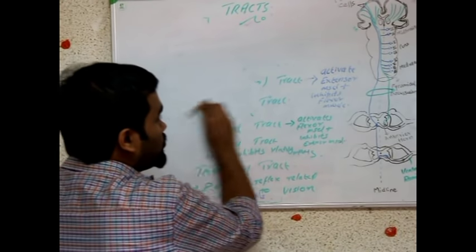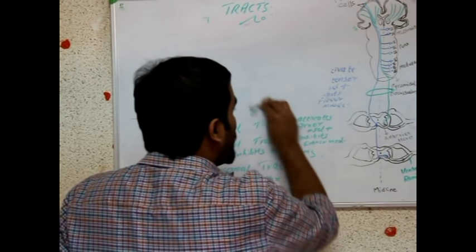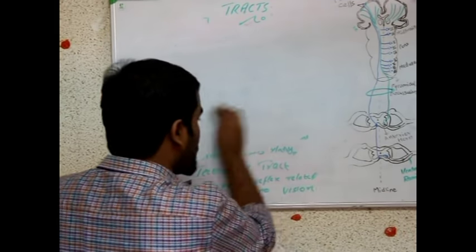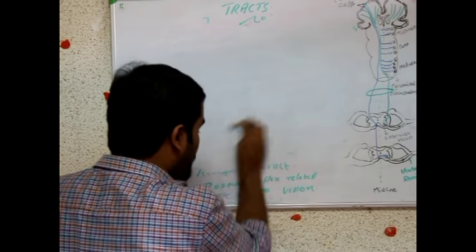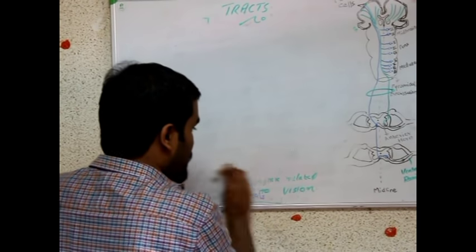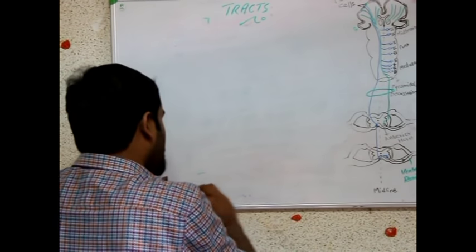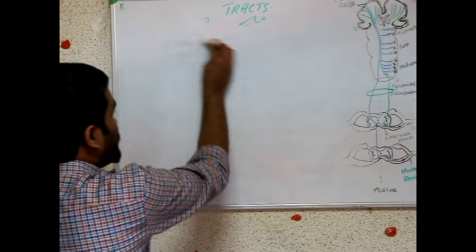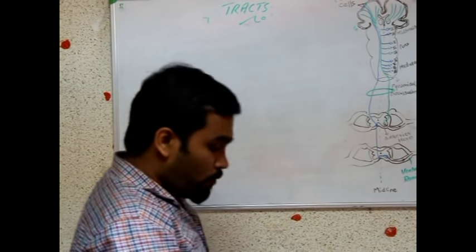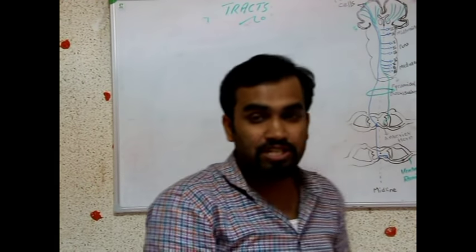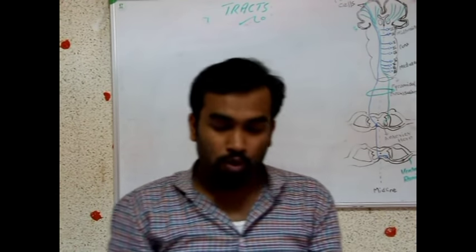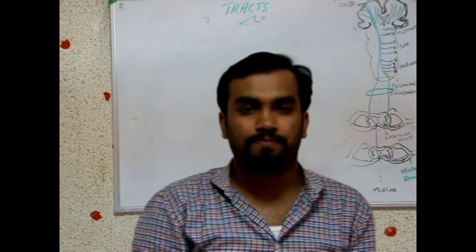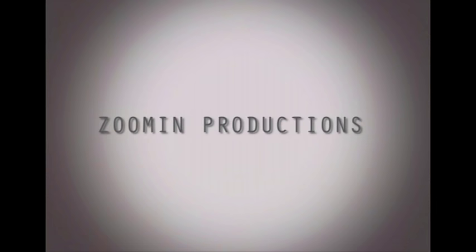So I think you are clear about the pyramidal and extrapyramidal systems briefly. Now we will move on to upper motor tract lesion and lower motor neuron lesion and the differences between them.